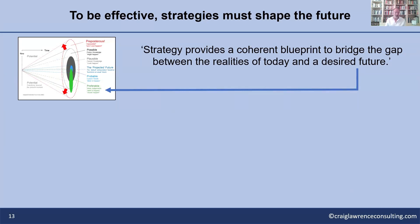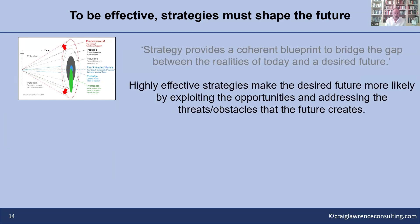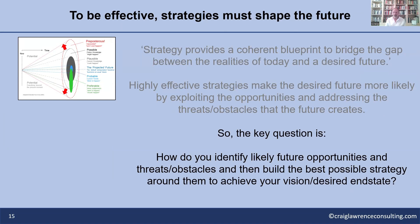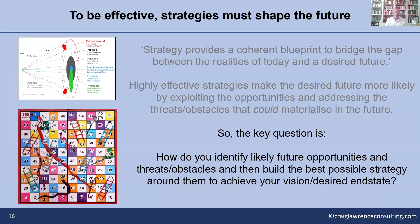So going back to our definition — highly effective strategies make the desired future more likely by exploiting opportunities and addressing the threats and obstacles the future creates. Think of it like snakes and ladders: we're at number one trying to get to 100, looking to the future to identify the ladders — the opportunities — that others miss, and avoiding the snakes — the obstacles — that will take us back.